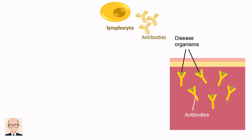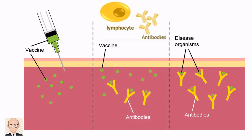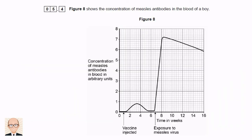But what if we can trick the system? What if we inject ourselves with a dead version of a pathogen — one that can't possibly make us ill? This is the vaccine: an inactive form of a pathogen. It tricks the lymphocytes into responding as though this is an actual new infection. They produce antibodies to the vaccine just as they would to the live pathogen. The pathogen is inactive, it can't reproduce and can't make us ill, but we now have a large number of lymphocytes floating around ready and waiting. We can see all of this in the graph.